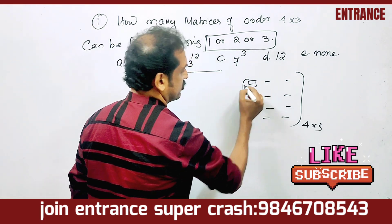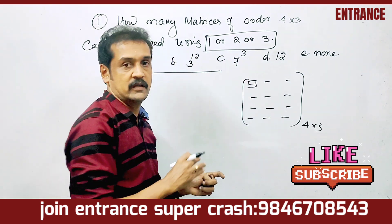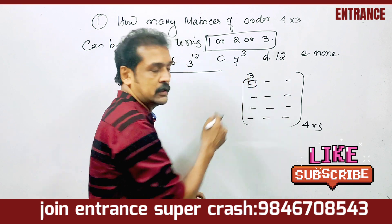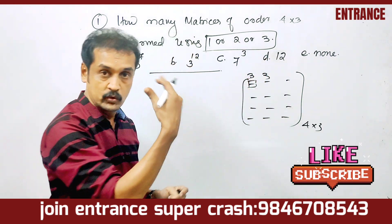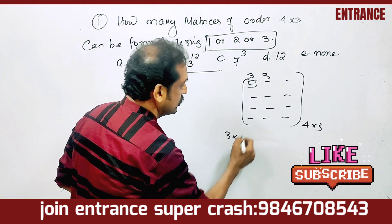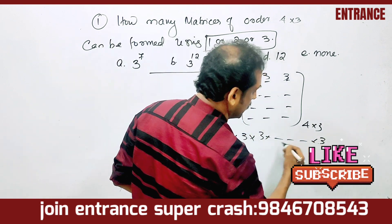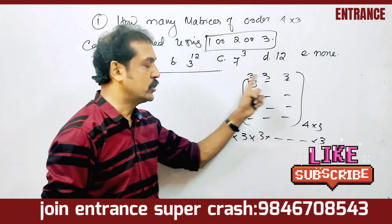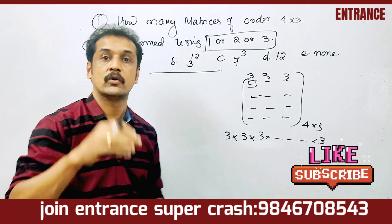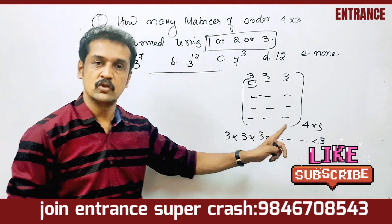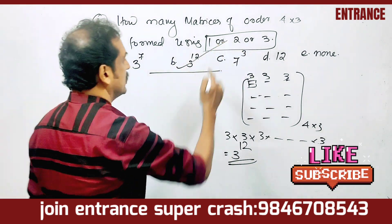In the first position, if we have three choices — 1, 2, and 3 — and we move along each position, each position has 3 choices. The total number of matrices of order 4 by 3 is 3 multiplied together 12 times, so the answer is 3 raised to 12.